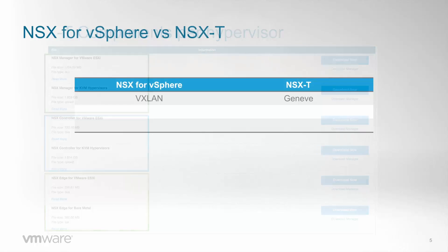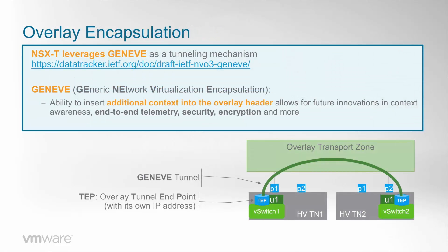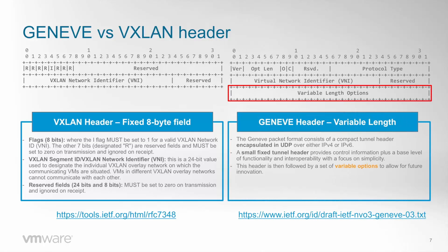Let's now look at the main differences versus the NSX for vSphere platform. The first one is the overlay encapsulation protocol. NSX-T uses Geneve because it allows adding additional context into the overlay header, which in turn will allow NSX-T to provide advanced functionalities in future releases like distributed network encryption or end-to-end telemetry. If we look at the headers, we can see that VXLAN is a fixed 8-byte field, while the Geneve header allows for additional options.